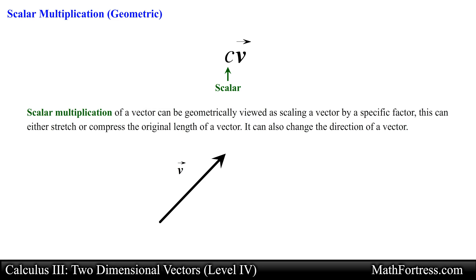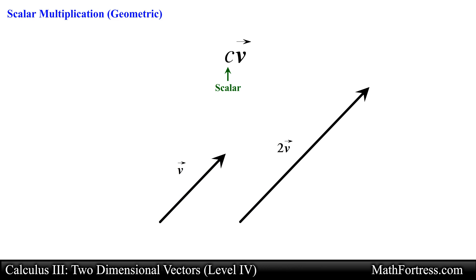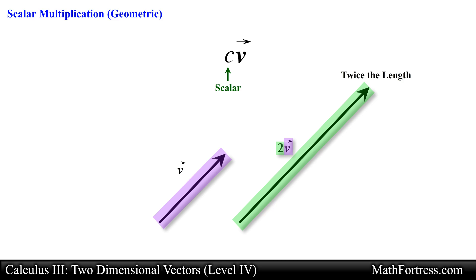As the name suggests, scalar multiplication of a vector can be geometrically viewed as scaling a vector. This can either stretch or compress the original length of a vector, and it can also change the direction of a vector. For example, say you wanted to double the length of a vector. If this vector represents the displacement of a particle between two points and we wanted the particle to move twice as far in the same direction as vector V, we would denote this vector as 2 times vector V. Here the number 2 is the scalar and it instructs us to take vector V and double the length, keeping the same direction.